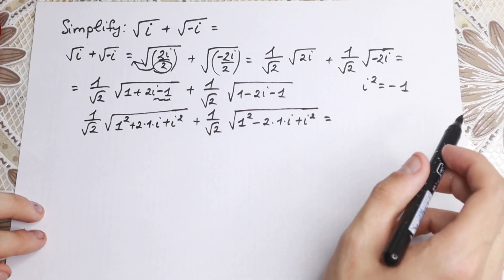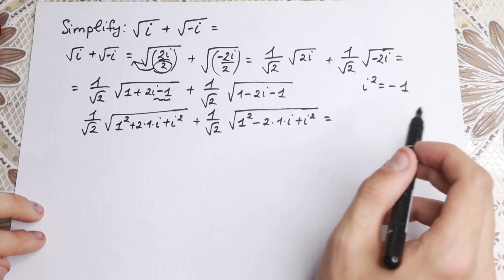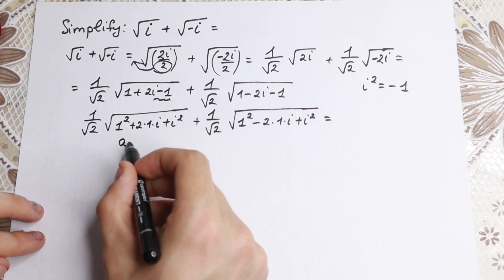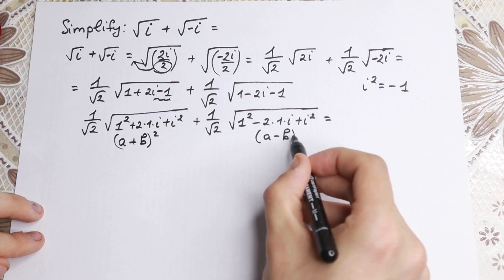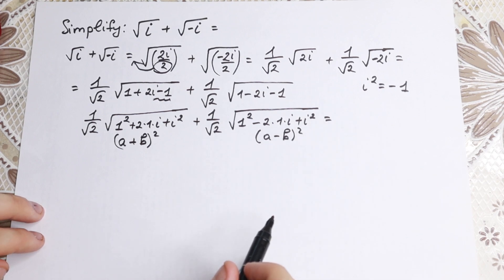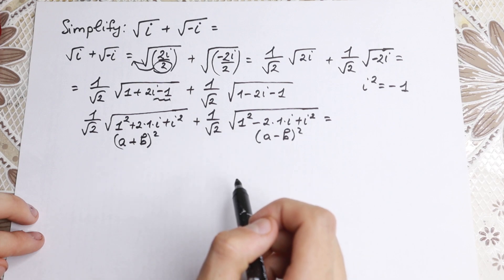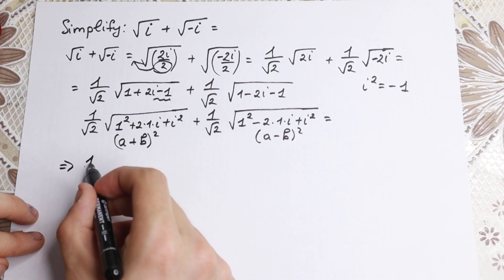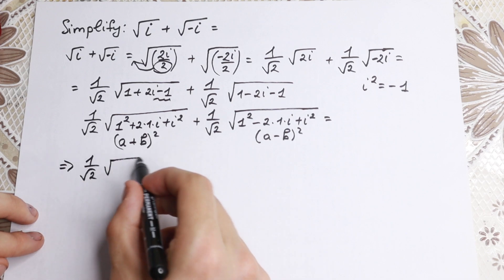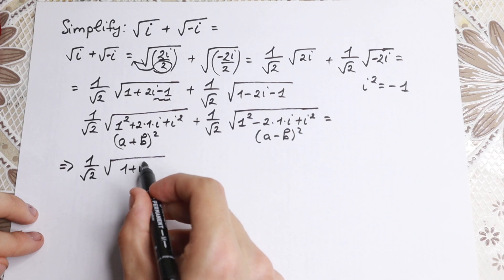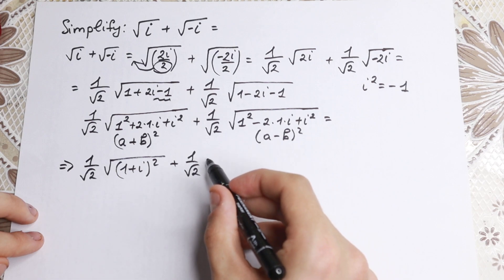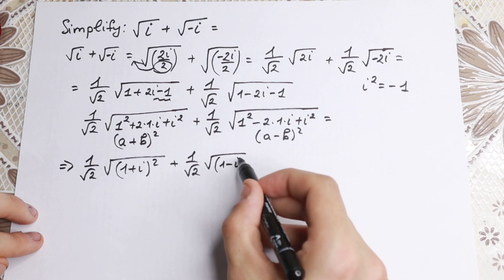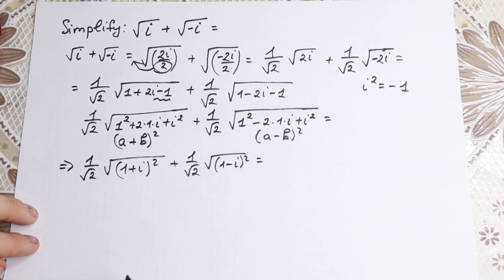If we recall the formula for (a + b) squared and (a − b) squared, we can see that the first expression inside the square root is exactly (1 + i) squared, and the second is (1 − i) squared. We can now complete our perfect squares using these formulas. As a result, the first term becomes 1 over square root of 2 times the square root of (1 + i) squared, and the second becomes 1 over square root of 2 times the square root of (1 − i) squared.